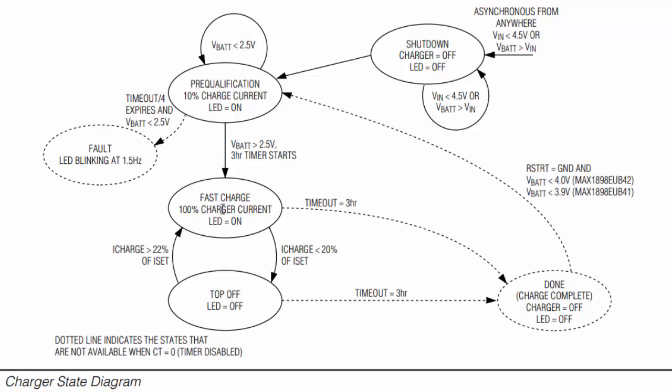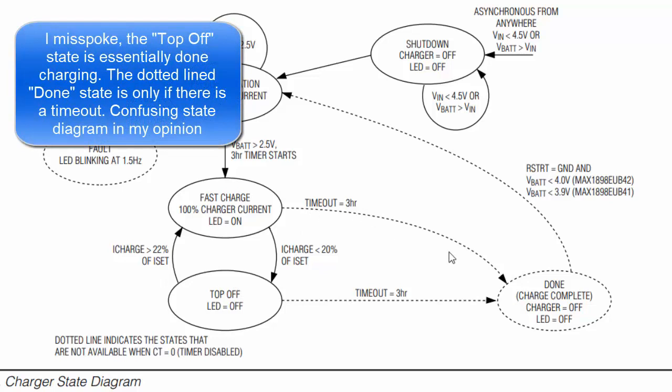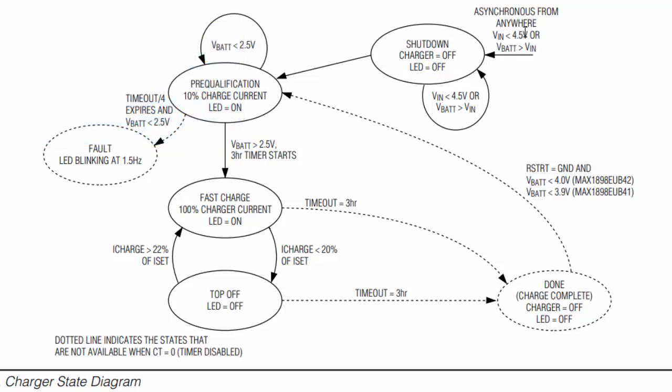Once we get above 2.5 volts we go into fast charge mode, charging at the current set by the resistor. Eventually as the battery becomes almost fully charged, it goes into a lower current charge state for top-off. Once charging is complete, the charger turns off and the LED turns off. If the power supply is below 4.5 volts or battery voltage is higher than the supply, it'll be in shutdown safety mode.